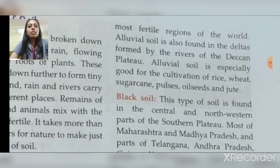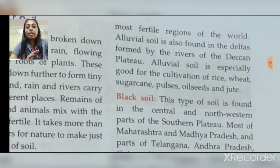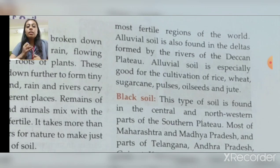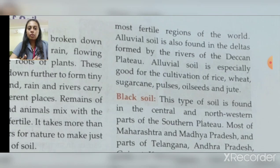Alluvial soil is especially good for the cultivation of rice, wheat, sugarcane, pulses, and oilseeds. All these varieties of crops grow best in alluvial soil.